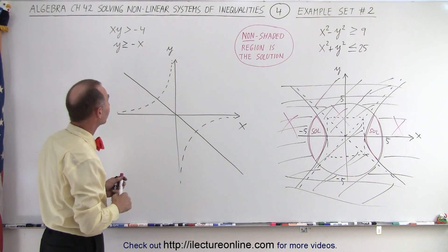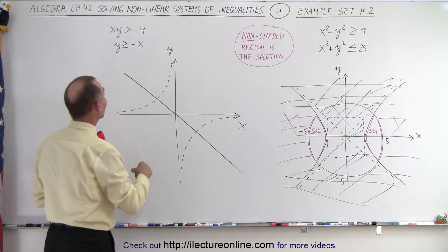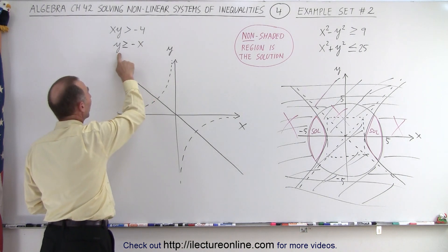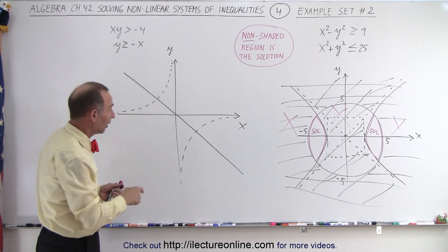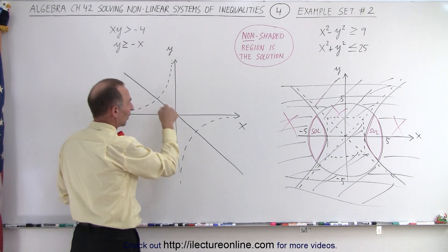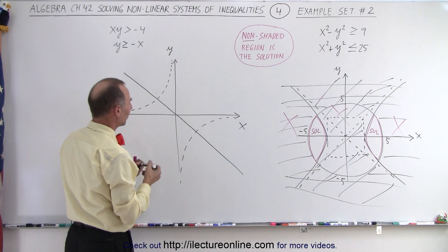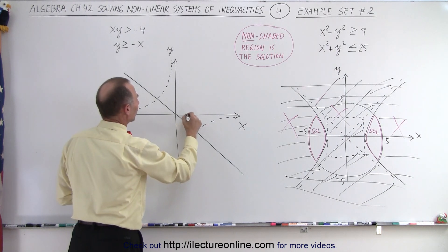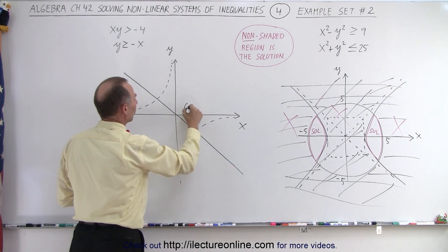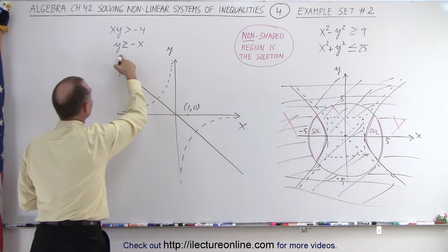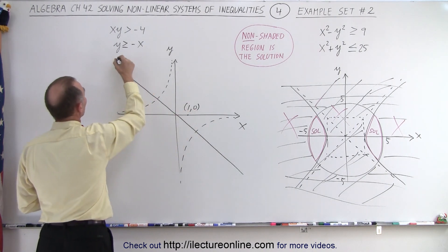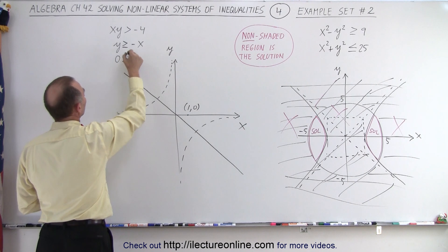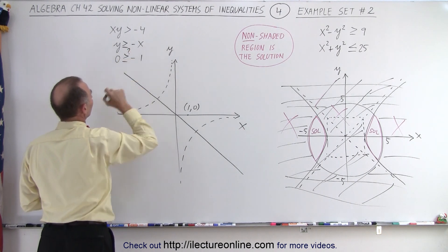Let's do the same over here. Let's start with the straight line: y greater than or equal to negative x. We want to try a test point. We can't pick (0, 0) because that's right on the line, so let's pick another point — how about (1, 0)? Plug that in: y is 0, x is 1. So: is 0 greater than or equal to negative 1?